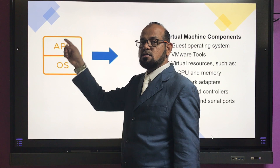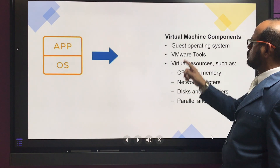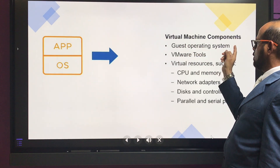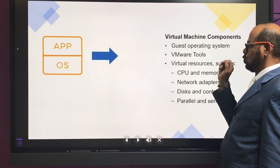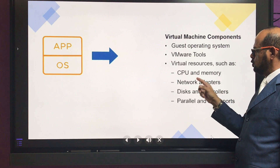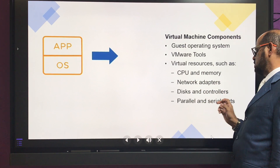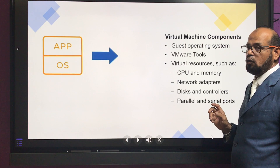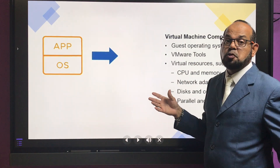What does a virtual machine contain? It has an OS called guest OS, and applications which you can decide what to install. The components of the virtual machine are the guest operating system, VMware tools, and virtual resources such as CPU, network controllers, physical and parallel serial ports, CD-ROM, and display card/GPU.